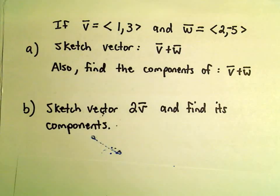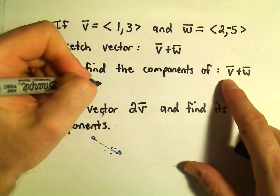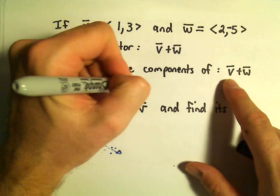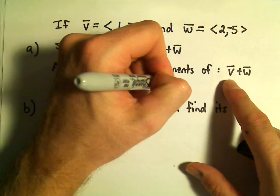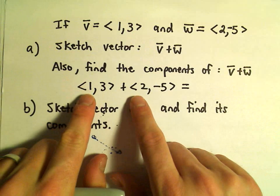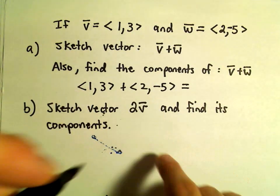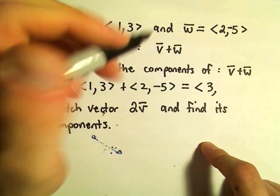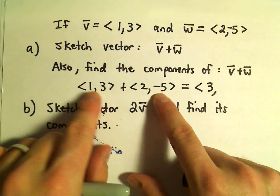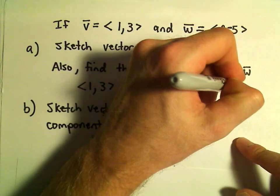Well, let's actually find the components. Okay, so vector v is 1 and 3, plus w, which is 2 and negative 5. Again, we just add respective components, so 1 plus 2, that's going to give us 3. 3 plus negative 5 is going to give us negative 2.